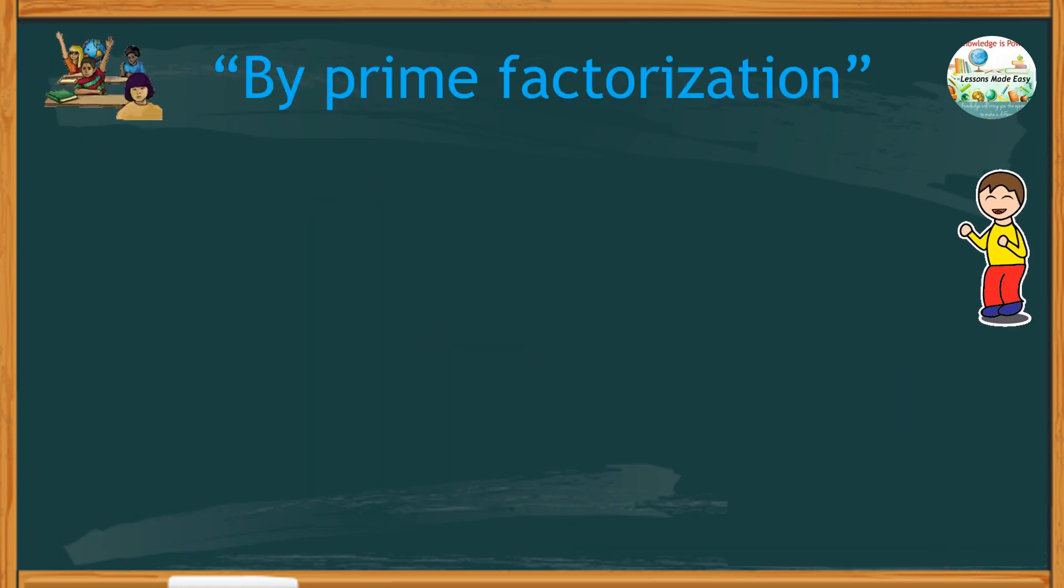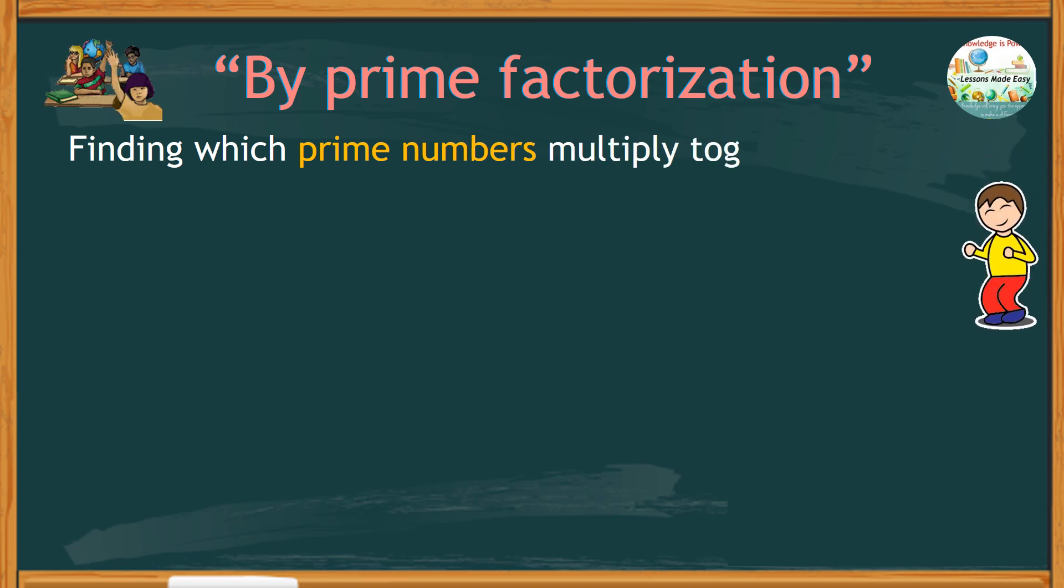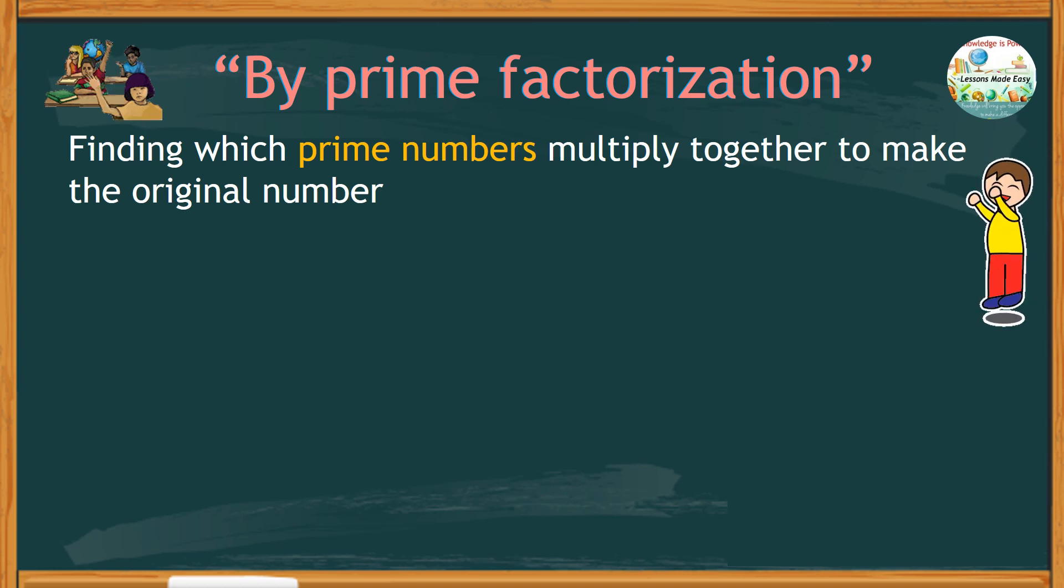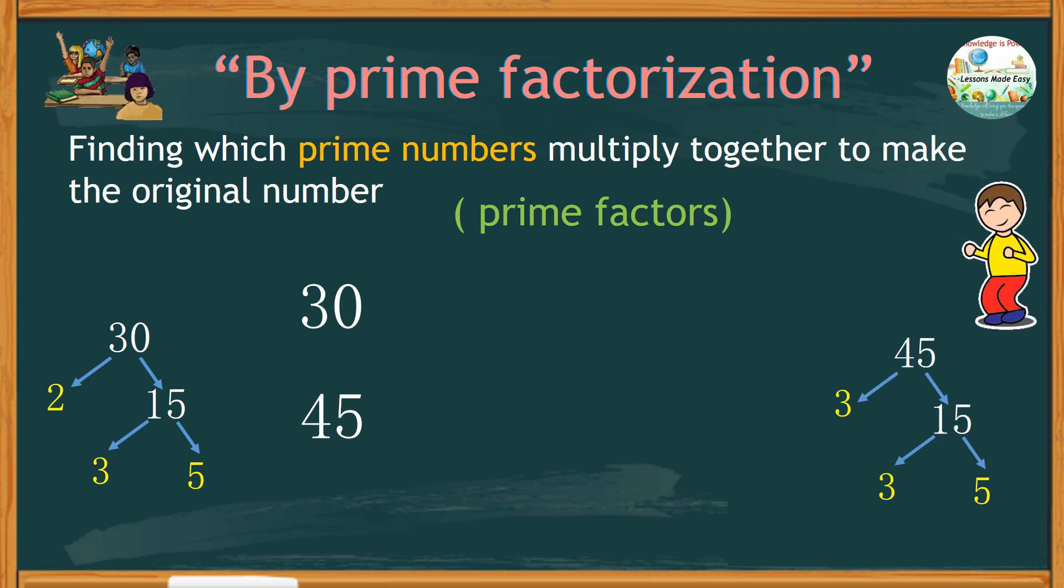And lastly, finding the highest common factor of 2 or more numbers can also be done by using the method called prime factorization. It means finding which prime numbers multiplied together to make the original number. These prime numbers are called prime factors. For example, if you are to find the highest common factor of 30 and 45, we have to find the prime factors of 30 and 45. So for 30, the prime factors can be expressed as 2 times 3 times 5. And for 45, we have 3 times 3 times 5.